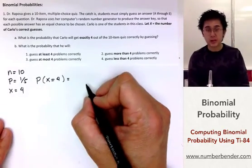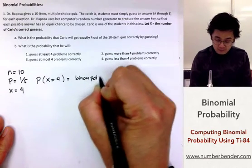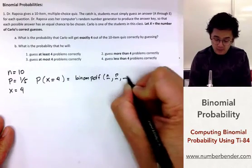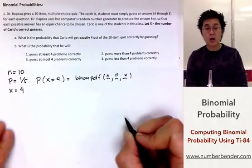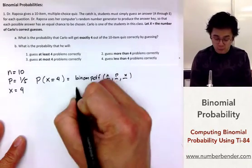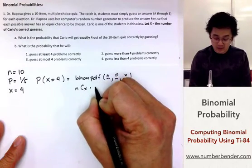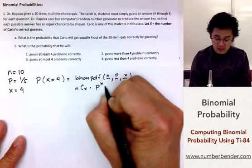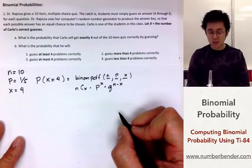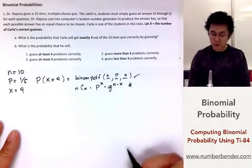We're going to use the calculator function binompdf, which will ask us for three values: n, p, and x. This is how easy computing for the probability is using the TI-84, as opposed to using the binomial distribution formula, which is nCx times p to the x times q to the n minus x, where q is the complement of p. So we're going to use the calculator function instead.